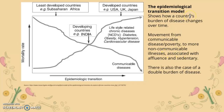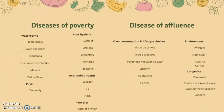Diseases of poverty tend to be waterborne diseases, pest diseases, poor hygiene, poor public health, and poor diet. Diseases of affluence, on the other hand, are caused by lifestyle and over-consumption, the environment one is in, or simply longevity of life — essentially old age.